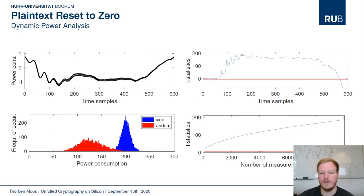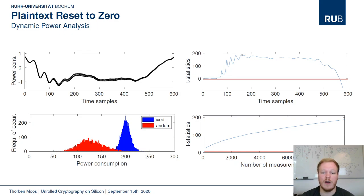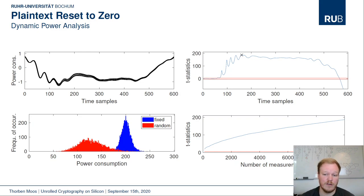A reset strategy has been proposed in literature to mitigate these simple attacks. We test four different reset methods: first, resetting the plaintext to all zeros between encryptions; second, resetting both the plaintext and the key to all zeros; third, resetting the plaintext to a random value; and fourth, resetting both the plaintext and the key to a random value.